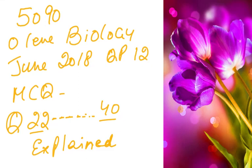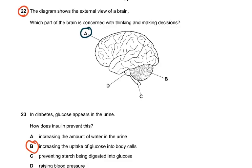This is the second video on the June 2018 Paper 1-2 and we'll be discussing questions 22 to 40. Starting with question 22, the diagram shows the external view of a brain. Which part of the brain is concerned with thinking and making decisions?